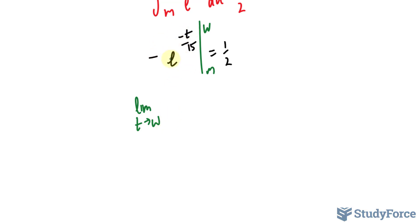So the limit of this as t approaches w is zero. We don't have to worry about that. Minus, evaluating at m, we have negative e to the power of negative m over w equals one-half.